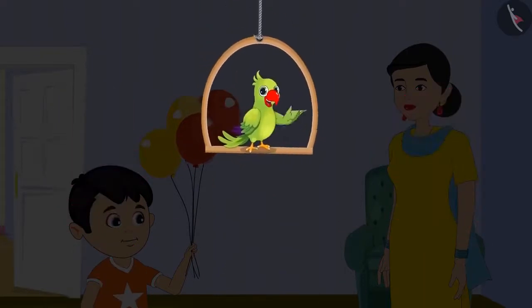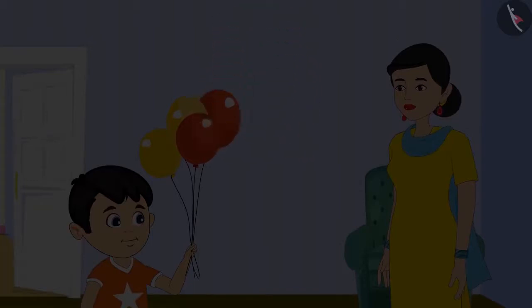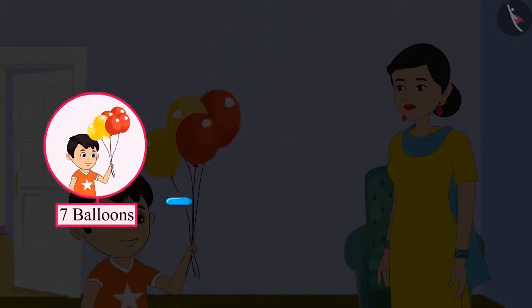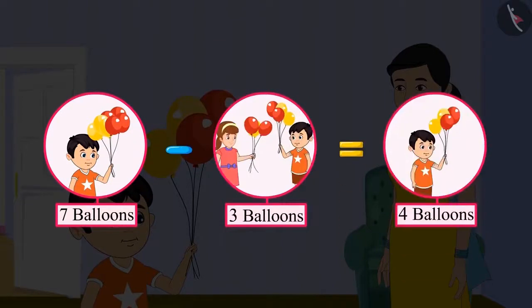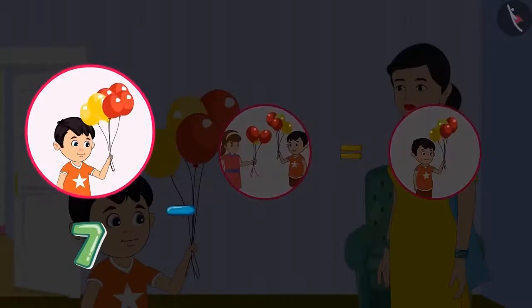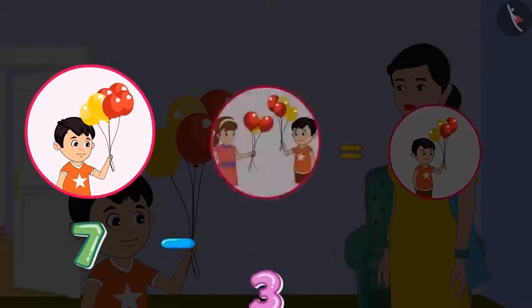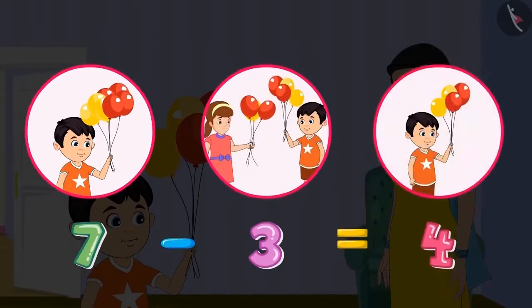Come, let us see how to write this in a systematic way. On subtracting three from seven, four are left. Seven minus three equals four.